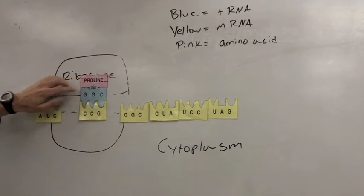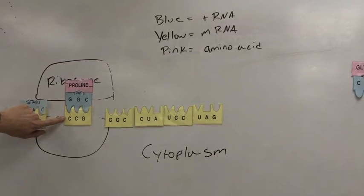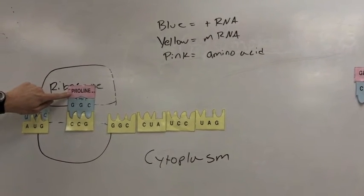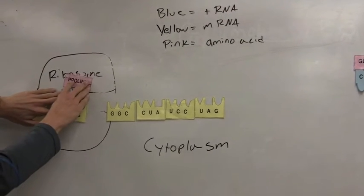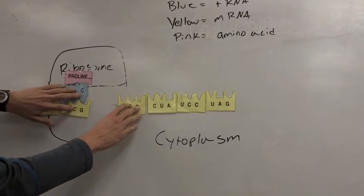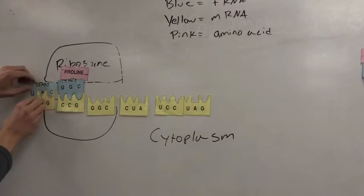You can see that the anticodon of the transfer RNA matches up with the codon of the messenger RNA, and the amino acid is attached to the transfer RNA. And so this one moves through the ribosome, and the process repeats itself with the next messenger RNA.